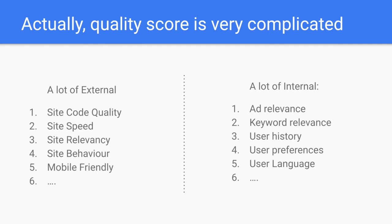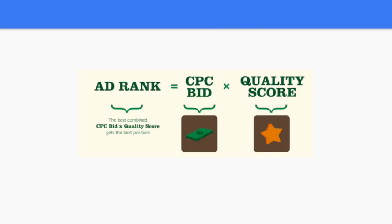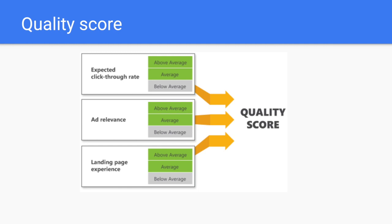What you have to know is that quality score depends on a lot of different factors — for example, external factors from the landing page: code quality, site speed, site relevancy, site behavior, mobile-friendliness, how people behave on your site, conversion information, and hundreds of other things. Some come from ads directly, some from SEO information on the page, all combined together. To keep it simple, we use three key metrics here, and each metric has three possible marks: above average, average, and below average. If you have a below average mark for any of these three, you are really doing your job badly.